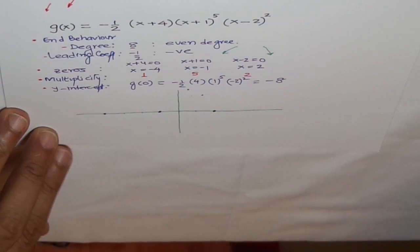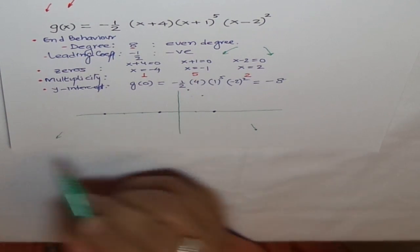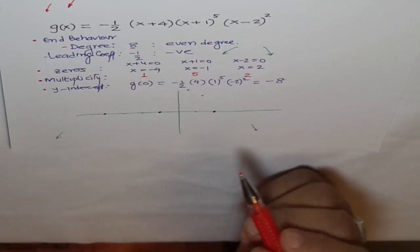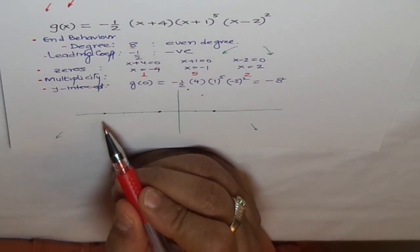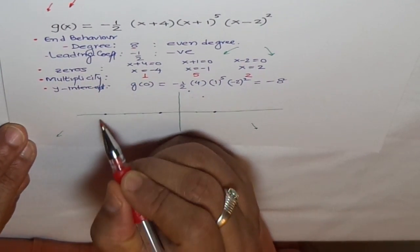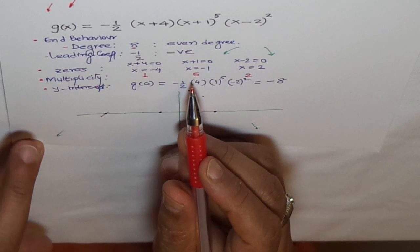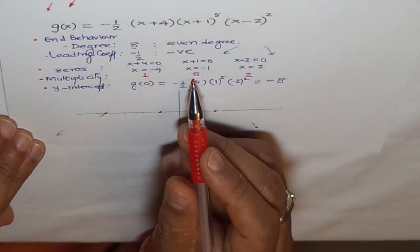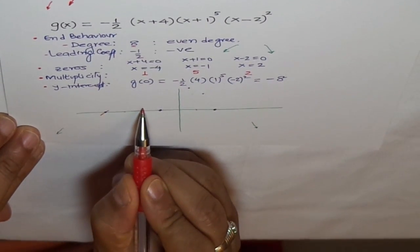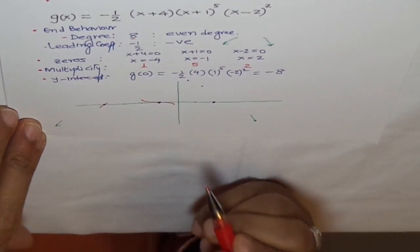End behavior is even function with negative leading coefficient, both sides are down. So we'll start from this side. Here, the first zero we hit is minus 4, which is of multiplicity 1, so it just crosses the line. The second one is minus 1, and this time it is of order or multiplicity 5. How is 5 different from 3? 5 is more flat. So we'll make it very, very flat.